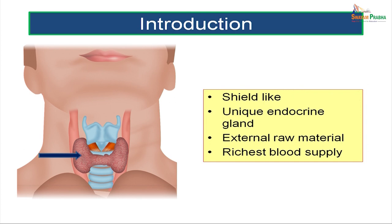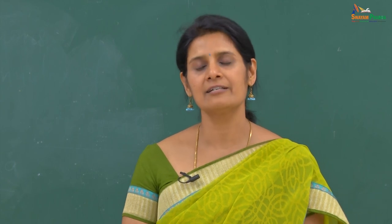Thyroid or 'thyroes' means shield-like. This gland is present in front of the neck in the form of a shield, hence it is called thyroid. It is a unique endocrine gland — it does not form hormones and secrete them immediately into the bloodstream. Instead, it manufactures hormones, stores them, and releases them into the bloodstream as and when required. It is also one of the largest endocrine glands.